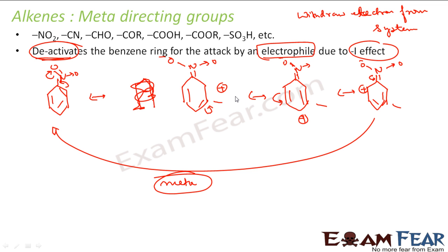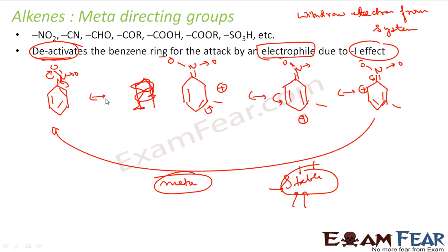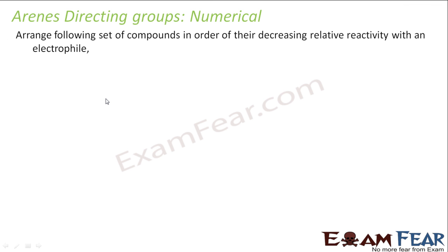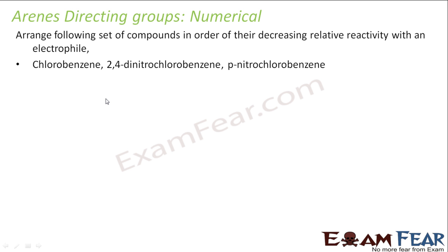For the OH group, there was a negative charge at ortho and para, so it was activating the benzene ring for attack. For the NO2 group, there is a positive charge at ortho and para, so it is deactivating the benzene ring. The compound with the activating group is more reactive towards electrophilic substitution reaction.